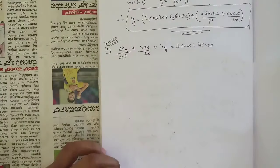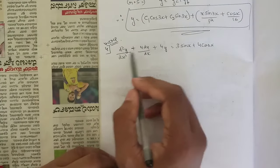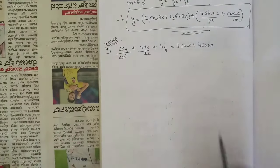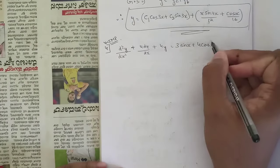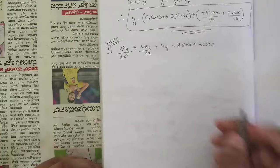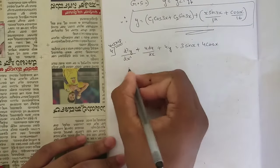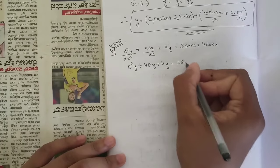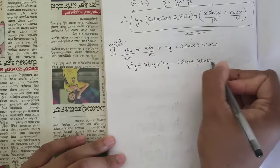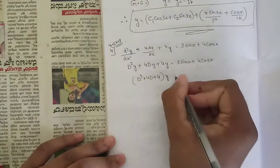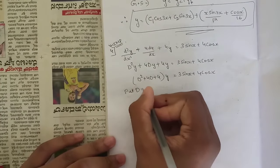This is a very important problem. The equation is d²y/dx² + 4 dy/dx + 4y = 3sin(x) + 4cos(x). This is a standard r(x) form with sine and cosine terms. The values of a are 1 and 1. We replace d² with d², so we get d² + 4d + 4 into y = 3sin(x) + 4cos(x).